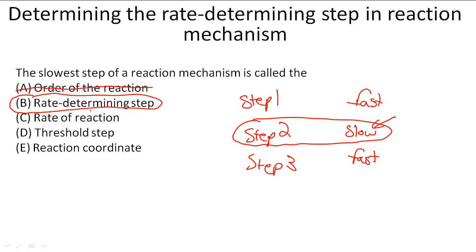And then we know that the slowest one is the rate determining step. We know it's not just the rate of the reaction. We know it's not the threshold step. And we know it's not the reaction coordinate.